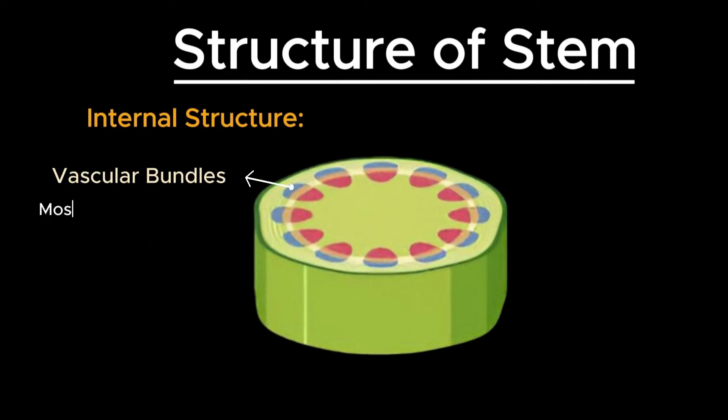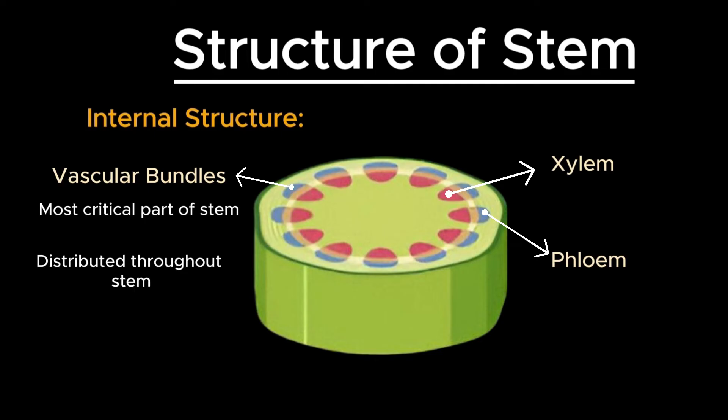The most critical part of the stem's internal structure is the vascular bundles, which are distributed throughout the stem. These bundles contain xylem and phloem tissues, organized in different patterns depending on whether the plant is a dicot or a monocot. The xylem is responsible for transporting water and minerals from the roots to the rest of the plant.